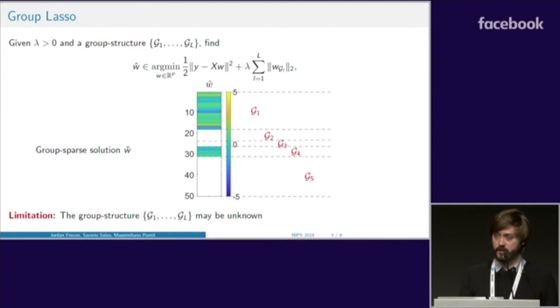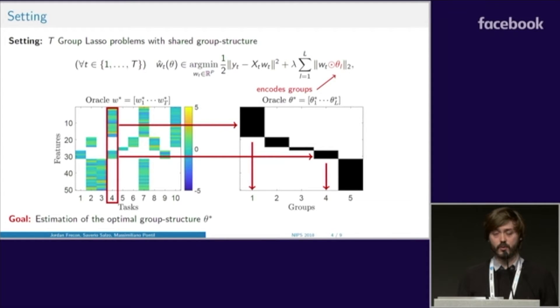There exist many efficient solvers to find W. However, it requires the group structure to be known in advance. In this work, we propose to estimate the optimal group structure. To do so, we consider a multitask setting where we have T group lasso problems sharing the same group structure. The groups are encoded by binary matrices theta 1 to theta L, and each column of theta encapsulates different groups. For example, the first group is made of the first 18 features, so theta 1 equals 1 from 1 to 18 and 0 otherwise.